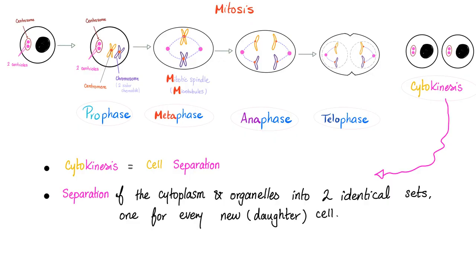Cytokinesis — this is the easiest because the name literally has the answer. Cell separation. Separation of the cytoplasm and organelles into two identical sets, one for each new cell. Why not separation of the nuclear material? Because the nuclear material was already separated in the anaphase.